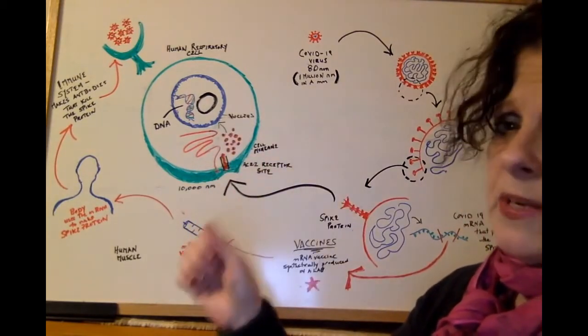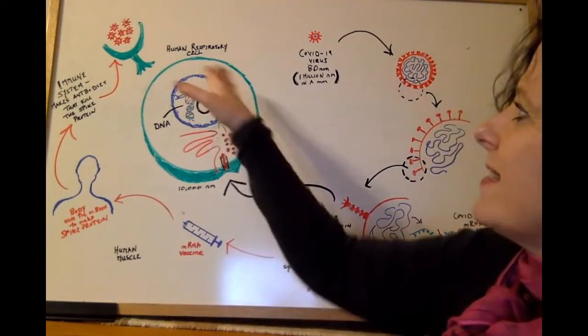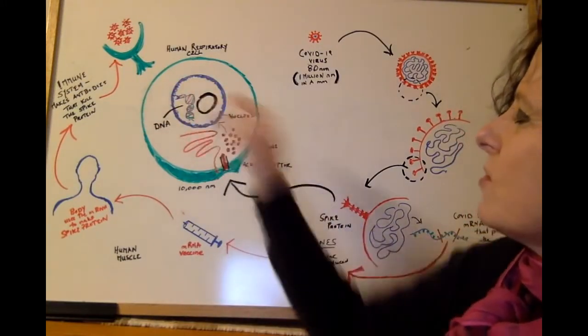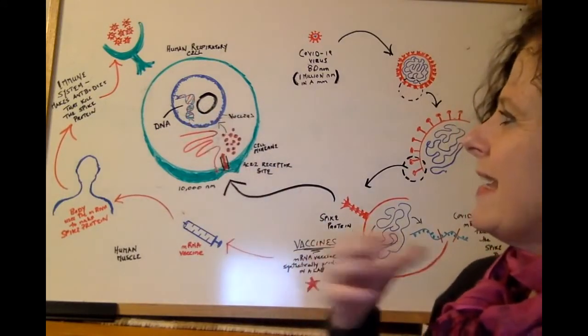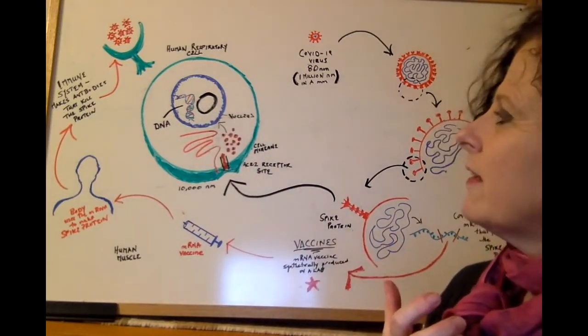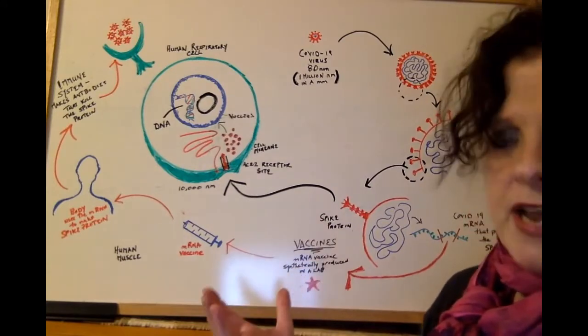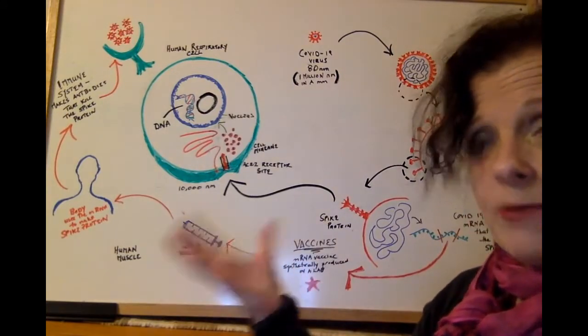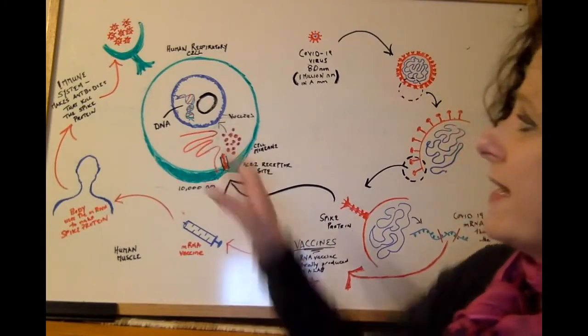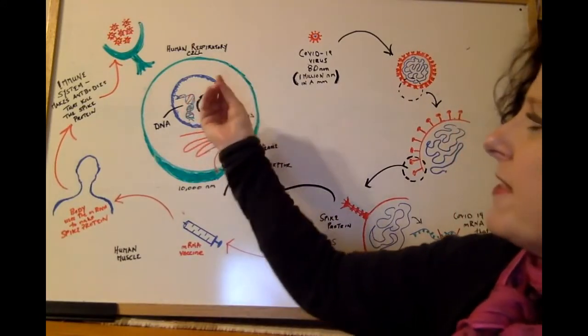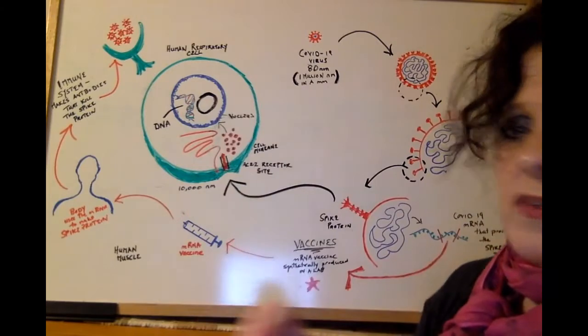The most important organelle that we need to talk about is the nucleus. We call it the center of the cell. And what's important about the nucleus is it contains our genetic material. And in humans, that genetic material is called DNA, which I'm sure all of you have heard about. DNA is extremely important. It's kept inside the nucleus of every single one of our cells.